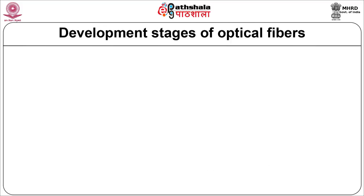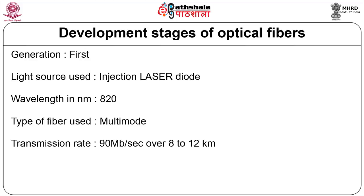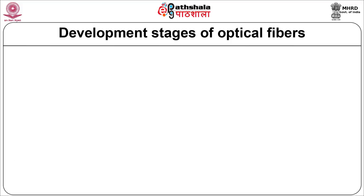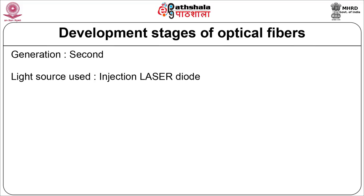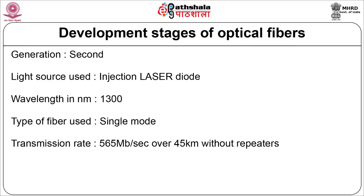Development stages of optical fiber: In the first generation, the light source used is an injection laser diode operated at a wavelength of 820 nanometers, multimode fiber is used, and the rate of transmission is 90 MB per second over 8 to 12 km, with attenuation of 3 to 8 dB per km. In the second generation, the light source used is an injection laser diode, wavelength is 1300 nanometer, single mode fiber is used, transmission rate is 565 MB per second over 45 km without repeaters, and attenuation is less than 0.5 dB per km.